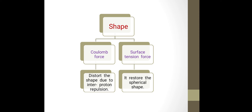Coulomb force distorts the shape due to inter-proton repulsion. Inside the nucleus, there are protons that repel each other and due to that repelling, they distort the shape of atomic nucleus.